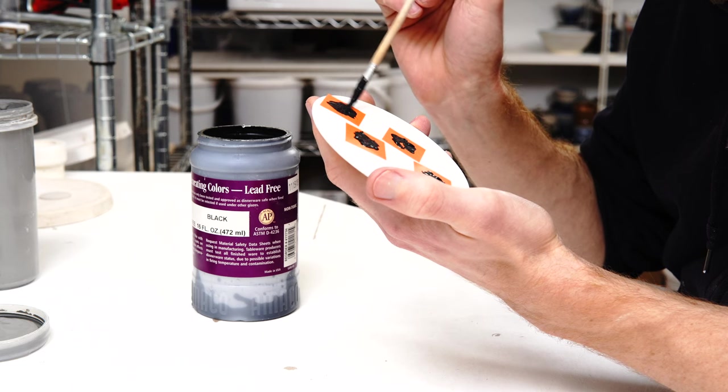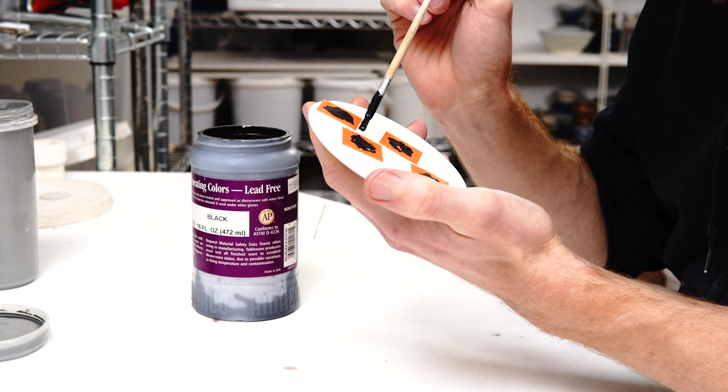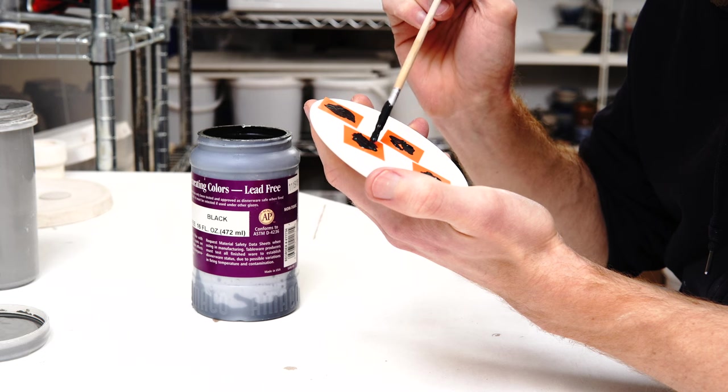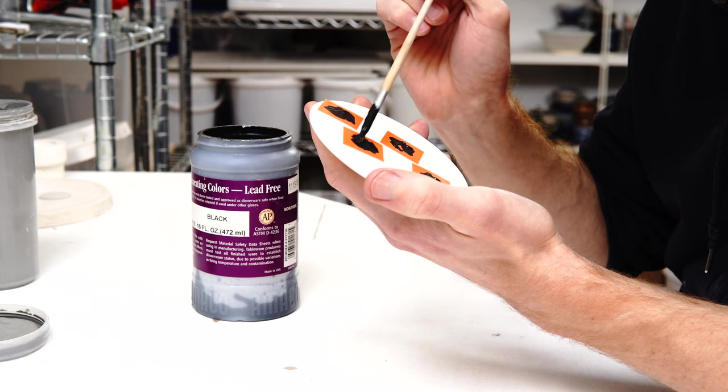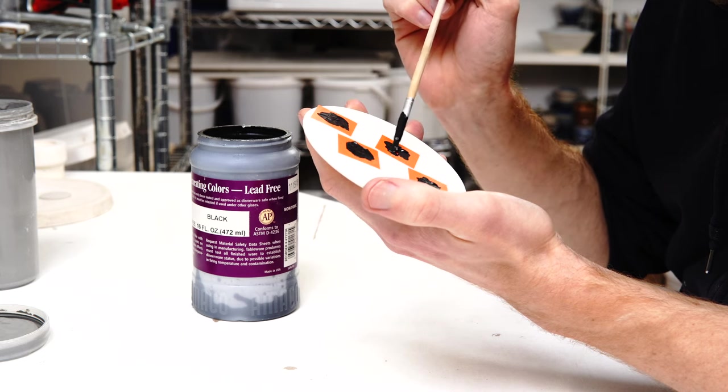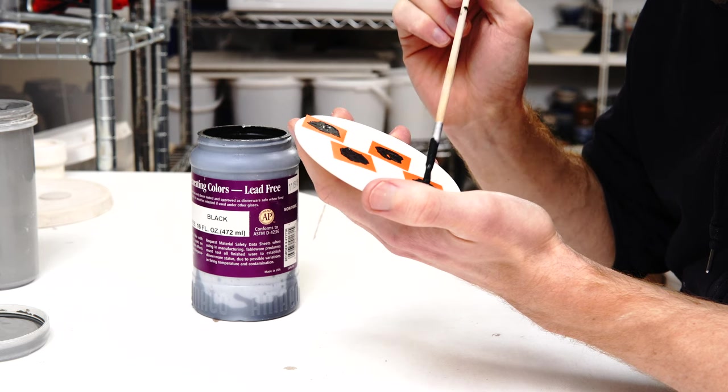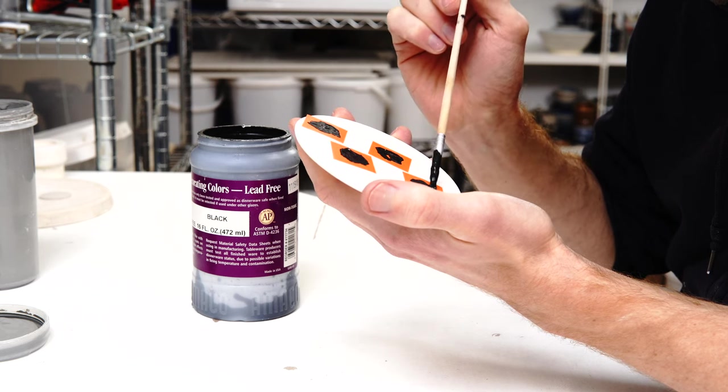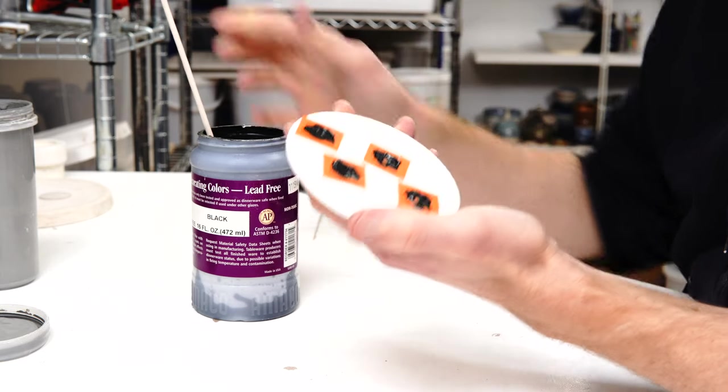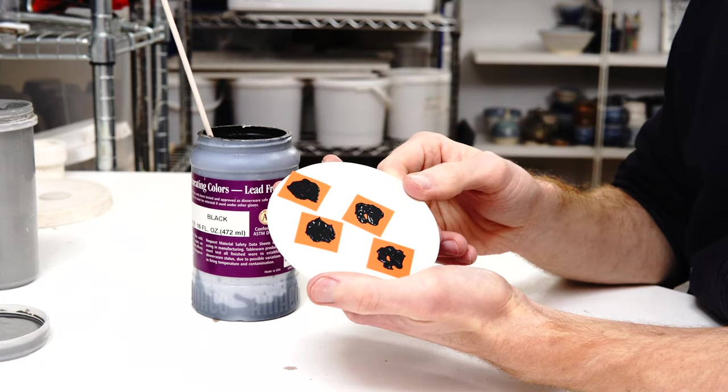Hoping the surface tension would work to pull it in more which I think it would have done if my underglaze was runnier, which it would be if it wasn't so old. So okay, right, give that a moment to dry. I'll do the same for a greenware.